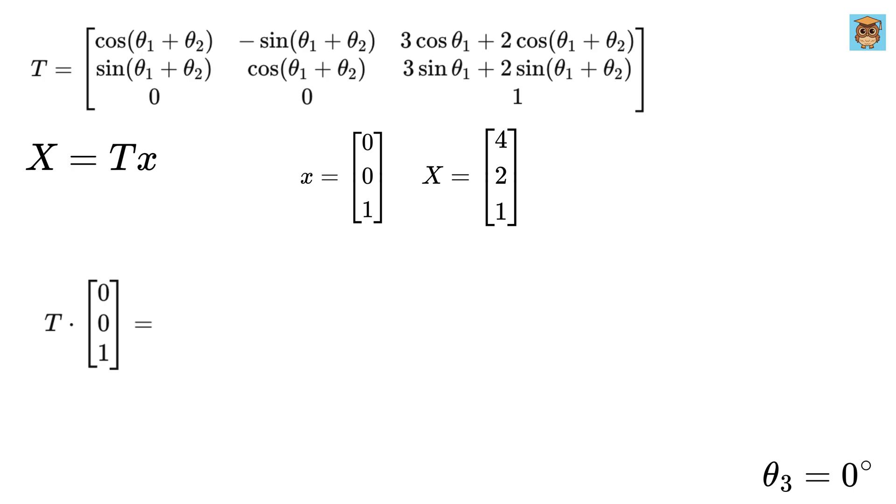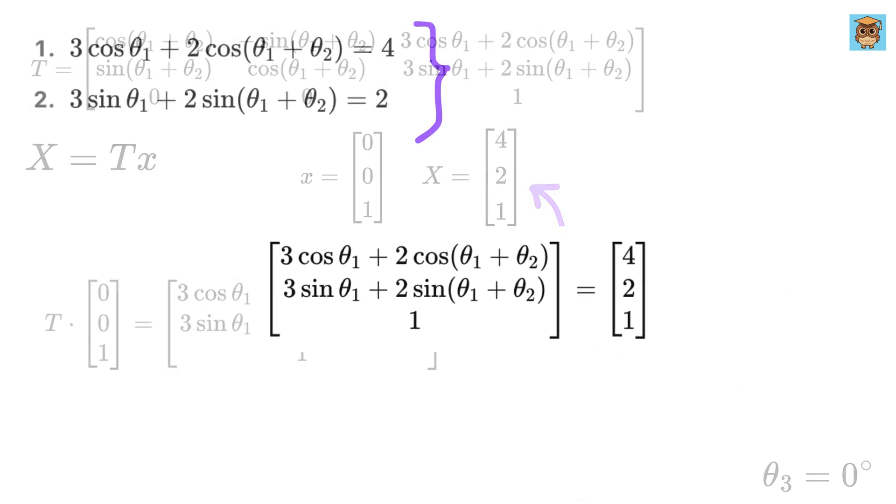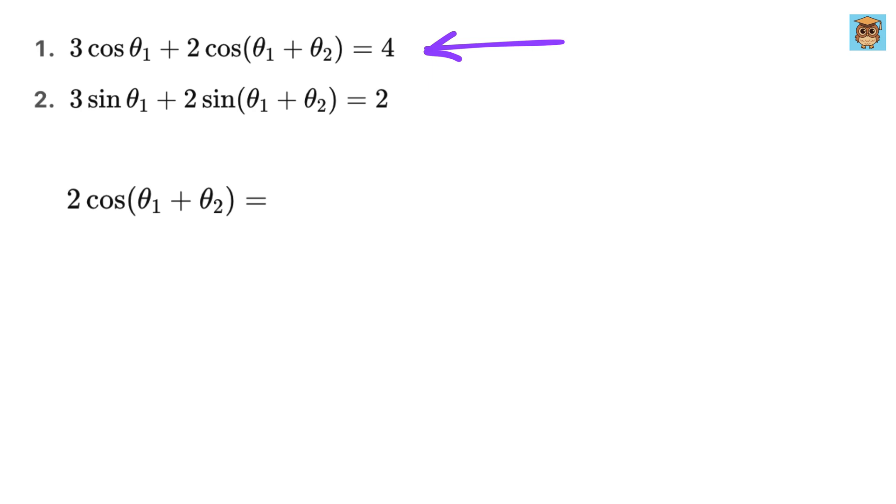Multiplying T with small x will give us this matrix. Now equate big X with this matrix. We get these two equations. So you can see that we have two unknowns and two equations. From this equation we can write 2 cos theta 1 plus theta 2 equals 4 minus 3 cos theta 1 and from this equation we can write 2 sine theta 1 plus theta 2 equals 2 minus 3 sine theta 1.